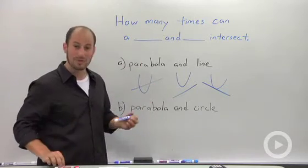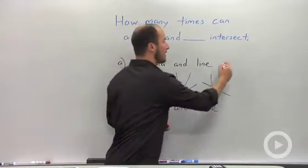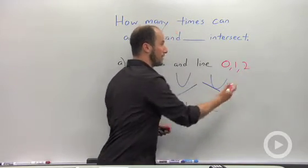So for a parabola and a line, we could actually have these two things intersect either zero, one, or two times.